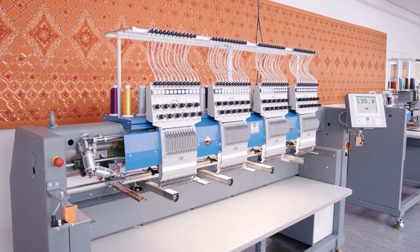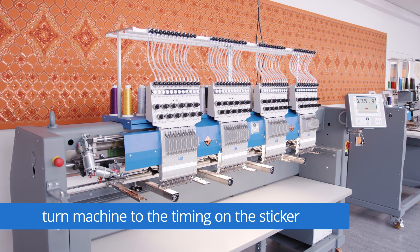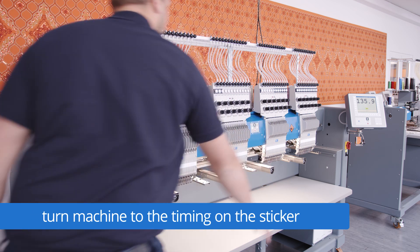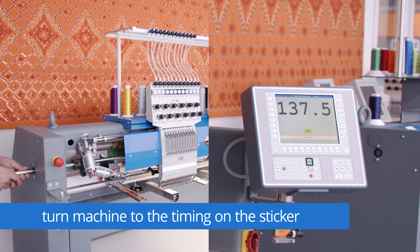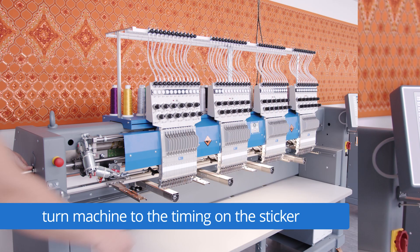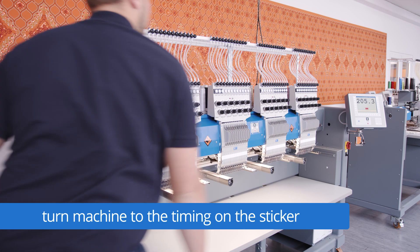In the next step we are turning the machine to the degrees that is showing on your sticker. Therefore we have to release the brake and then we are turning the machine with a square wrench to 205.3 on this machine. When we are at the degrees we have to switch on the brake.